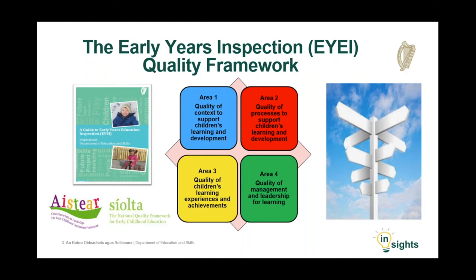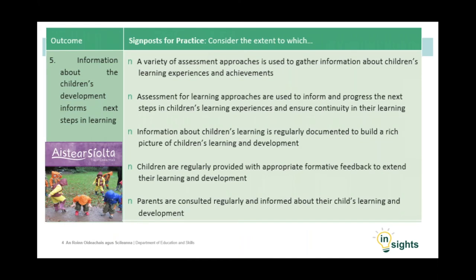Area 2 looks at the quality of processes to support children's learning and development. This includes eight specific outcomes covering aspects of provision including assessment. Outcome 5 in Section 2 of the framework focuses on assessment, and the next slide will show the associated signposts of best practice in this area.